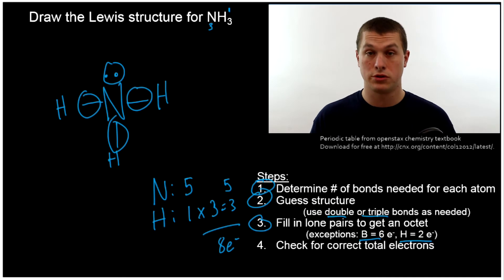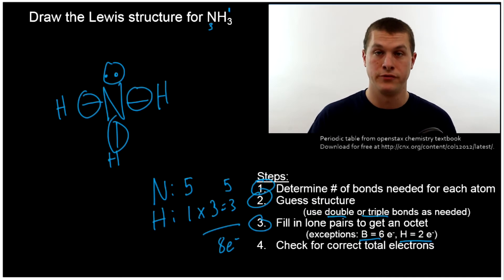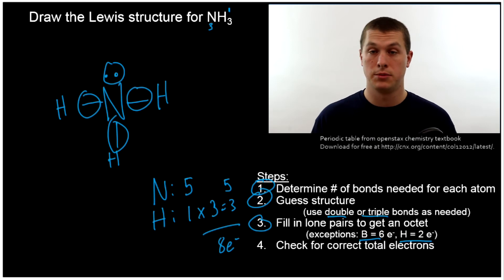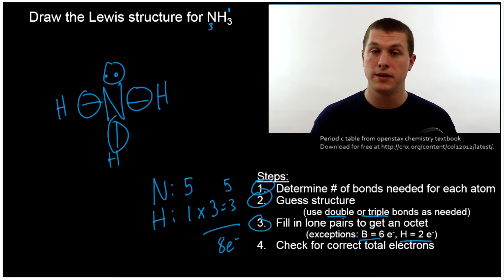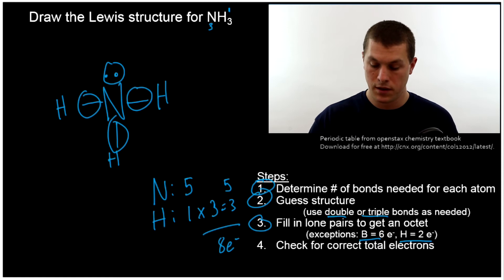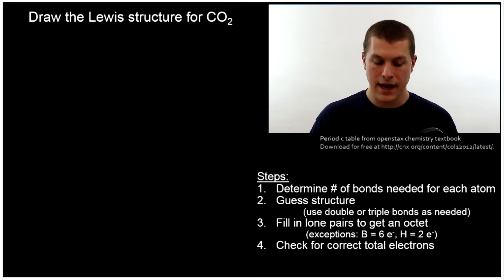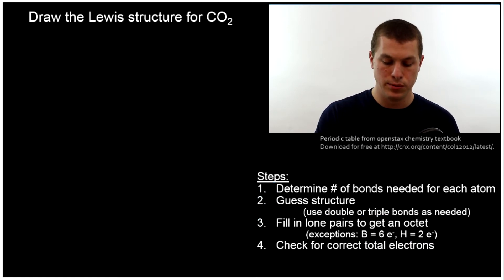Sometimes you might get your Lewis structure wrong the first time. These are relatively easy molecules, but if you get it wrong and the bonds don't work out, or you get the wrong number of valence electrons, just try again — keep guessing different ways to connect the atoms. Let's take a look at another example. This is CO2.